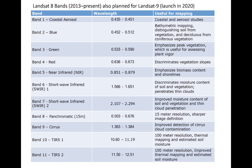Landsat 8 adds three bands: an additional visible band in the blue-violet for enhanced aerosol detection, a cirrus band similar to that available on GOES, and a second thermal IR band, which combined with the other is useful for deriving soil moisture from IR radiances.